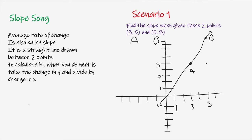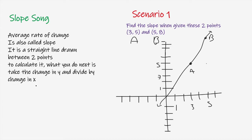Now, how do we actually calculate the slope between these two points? As the song states, you take the change in y and divide it by the change in x. Change in y is what you have to do to the y-value of point A to get it to the y-value of point B — that distance is delta y. Likewise, change in x is what you have to do to the x-value of point A to get to the x-value of point B — that distance is delta x.